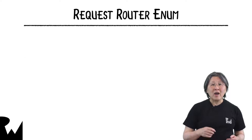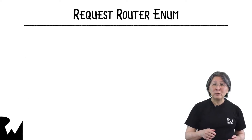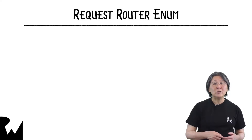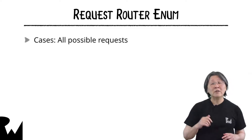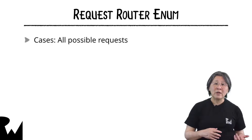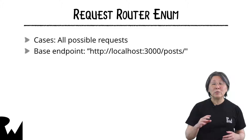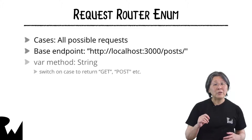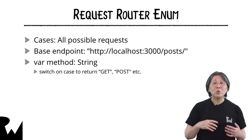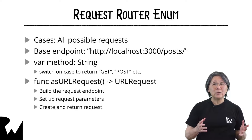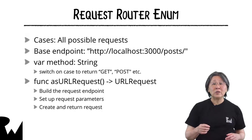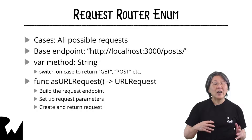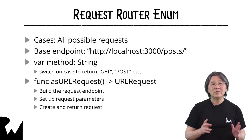In the introductory video, I mentioned AlamoFire's URL request convertible protocol, which lets you define an enum to create URL requests for your app's interactions with a REST API. Now you know what goes into a request, it's not hard to see how it could be encapsulated in an enum. The cases are all possible requests you'd want to make on the API, like get-all or create. You set the base endpoint, the method property returns GET, POST, etc. depending on the case, and the workhorse method asURLRequest builds the request endpoint, sets up the request parameters, and creates the request. In the challenge, you'll finish building a request router enum for the JSON server API. Unlike AlamoFire's protocol, you have to explicitly call this method, but it will still tidy up your code.